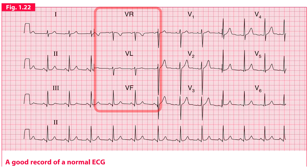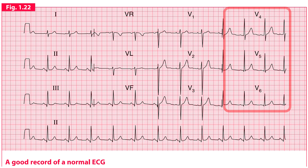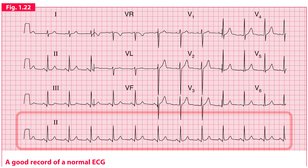Leads VR, VL, and VF are present in the second column. Leads V1 to V3 are present in the third column, and leads V4 to V6 are present in the fourth column. Apart from these four columns, there is an additional lead at the bottom which is covering the whole length of the ECG paper from left to right.